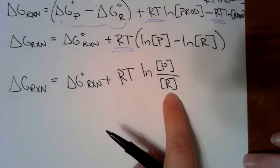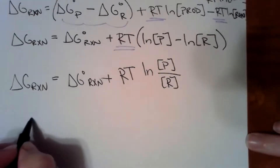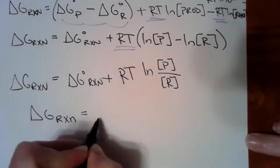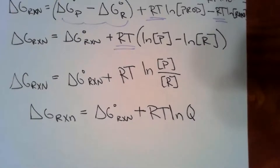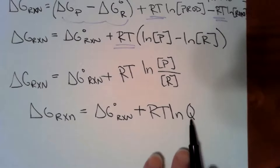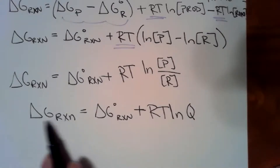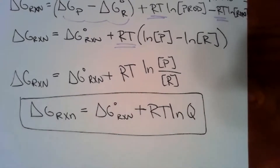Hopefully you recognize that products-over-reactants term — that's what we've been saying for the whole last month. So this equation simplifies to delta G non-standard equals delta G standard of the reaction plus RT ln of Q. Q is the reaction quotient. Q and K are found the same way, but K is at equilibrium and Q is at any time other than equilibrium. Delta G non-standard is also at some condition other than equilibrium. This equation we will use quite frequently.